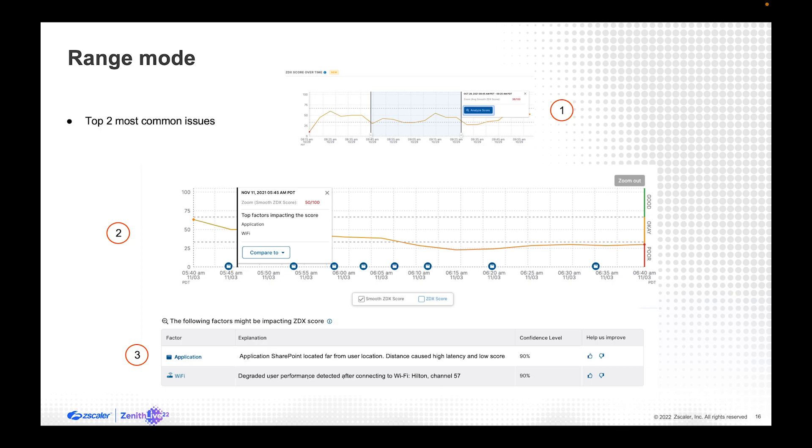The final mode we added, we call it the range mode, where we look at the window in time. Then once we analyze, we output the top two most common problems. In this case, it's an application issue and a Wi-Fi issue. When you click on one of those factors, you're also going to see in time these blue circles showing exactly when it happened during the time selection.